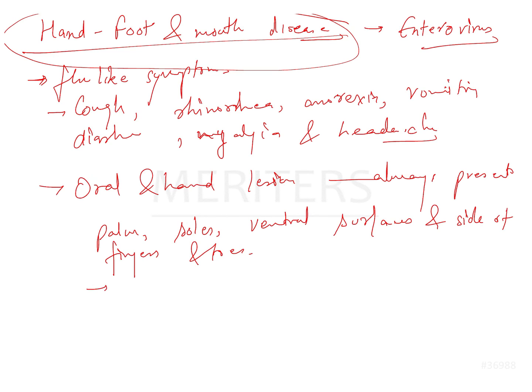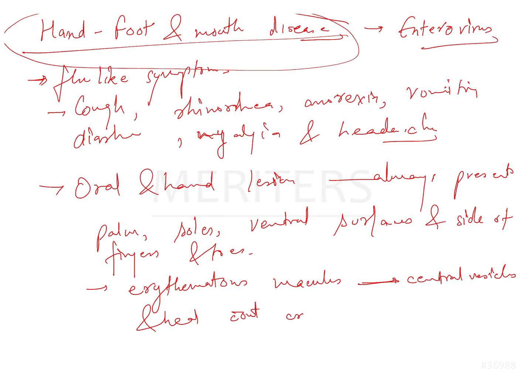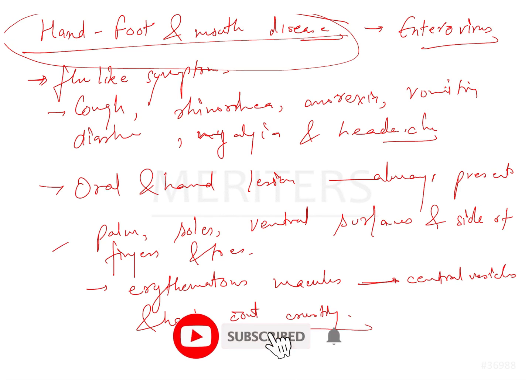Rarely, other sites such as buttocks, external genitals, and legs may be involved. Cutaneous lesions are erythematous macules that develop central vesicles and heal without crusting. In some cases, nail loss or ridges — known as Beau's lines — may occur several weeks later. Key features: sore throat, mild fever, herpangina-like oral lesions, and erythematous macules with central vesicles on palms, soles, and sides of fingers and toes.